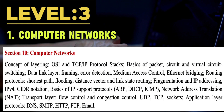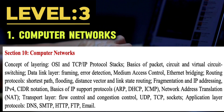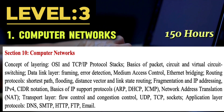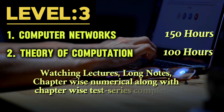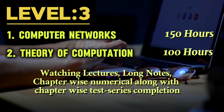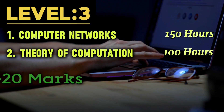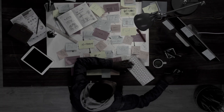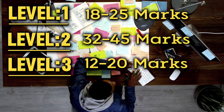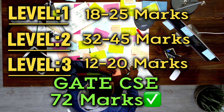Once you are done with Level 2, you are done with approximately 50 to 60 marks of your GATE preparation and are ready to move to Level 3. Computer Networks and related subjects are comparatively lengthy and advanced GATE CSE courses, requiring almost 150 hours of dedicated study. Theory of Computation can be completed in 100 hours. This time includes watching lectures, taking notes, and giving chapter-wise test series. These two subjects may cover 12 to 20 marks of GATE questions, and with all three levels combined, you are done with GATE technical preparation worth 72 marks.